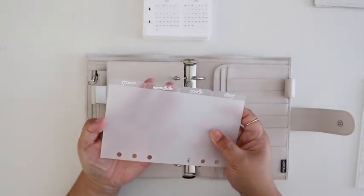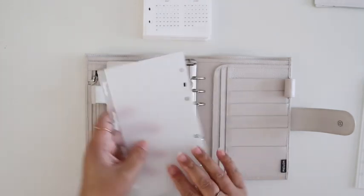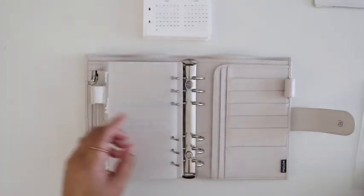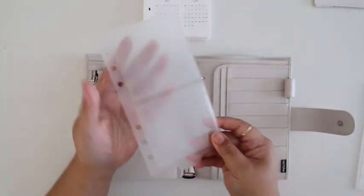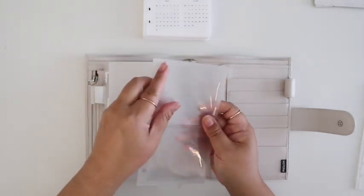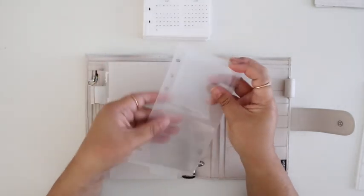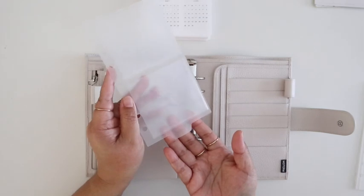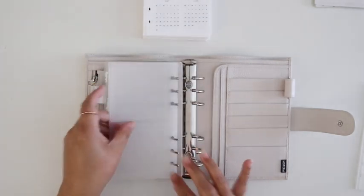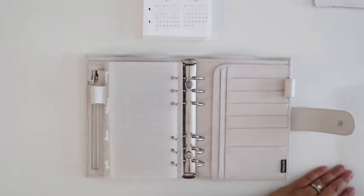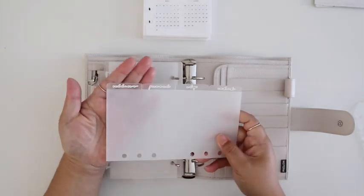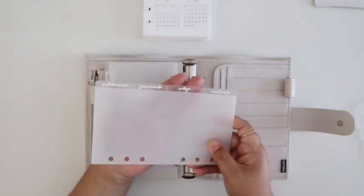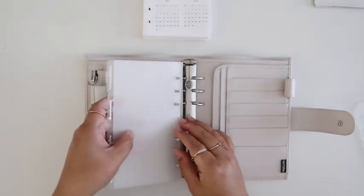And then I have two sets of side tabs, one for my yearly, monthly, weekly, and daily calendars. I have this little inbox or today bookmarker I just made myself out of a top tab divider and added some sticky pockets to it. And then my second set of side tabs are for wellness, personal, shop, and content.